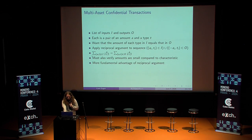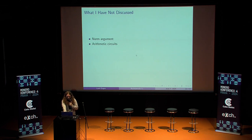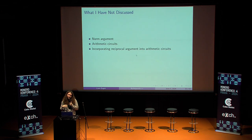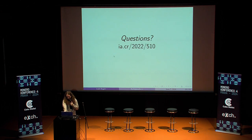I think this is a better example of why the reciprocal argument is interesting. Everybody uses it for lookups, but I feel like this version of it is somewhat underappreciated. To close out: I haven't really talked about a lot of the details of how we actually make it small — the norm argument is a variation of Bulletproofs where you take an inner product of a vector with itself, slightly smaller. We also have an arithmetic circuit protocol, how we incorporate the reciprocal argument into the arithmetic circuit — if you have experience with Halo 2, this is kind of like building a lookup gate. And then how to actually make the multi-asset confidential transaction protocol. But that's it. Thanks.